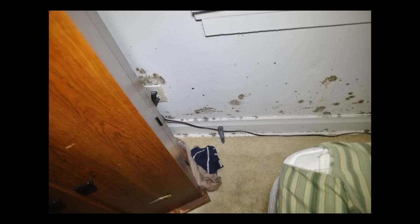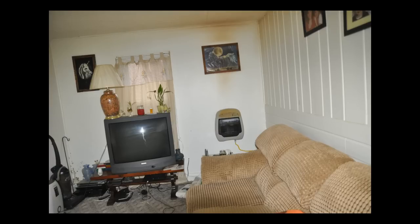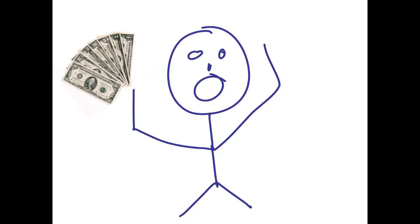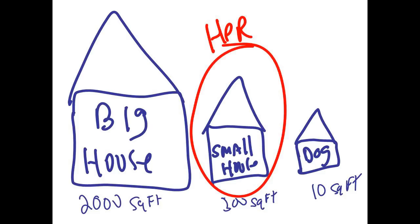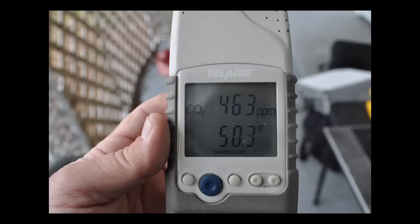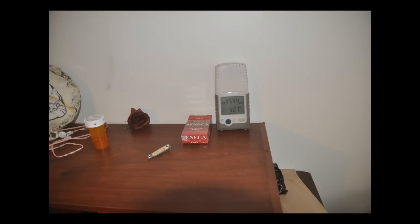He told the concerned landlord that the ventless heater must be removed and replaced with a vented heater or electric baseboard heat. Furthermore, he told the landlord that this very small house should have normal carbon dioxide levels between 400 and 800 parts per million, and that the 4500 parts per million carbon dioxide levels were rather high and could make occupants sleepy and drowsy.